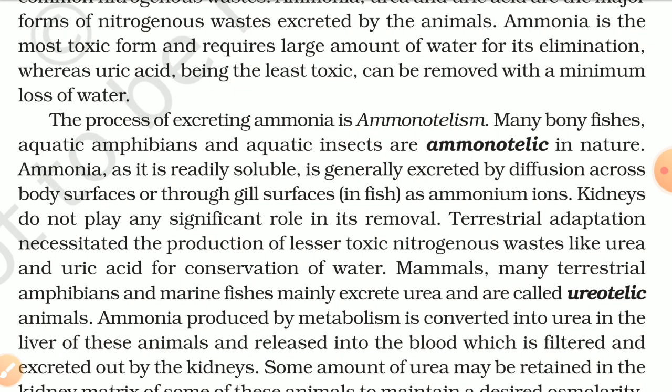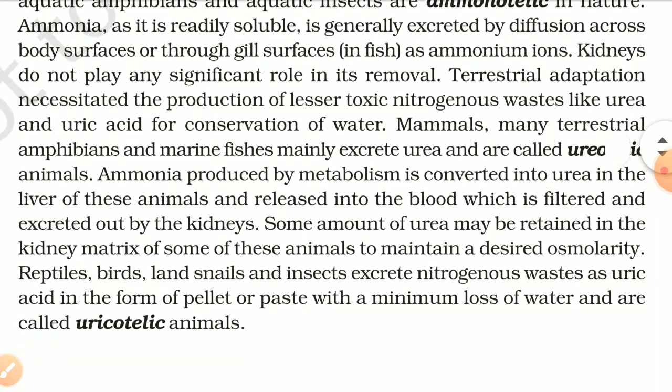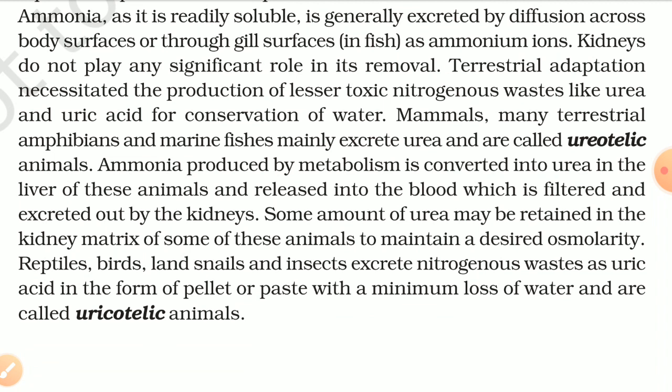Mammals, many terrestrial amphibians, and marine fishes mainly excrete urea and are called ureotelic animals. Ammonia produced by metabolism is converted into urea in the liver of these animals and released into the blood, which is filtered and excreted out by the kidneys. Some amount of urea may be retained in the kidney matrix of some of these animals to maintain a desired osmolarity. Reptiles, birds, land snails, and insects excrete nitrogenous waste as uric acid in the form of pellet or paste with a minimum loss of water and are called uricotelic animals.